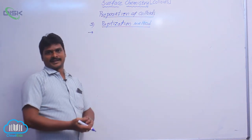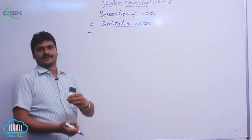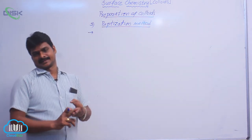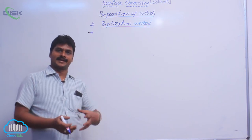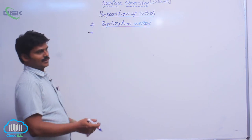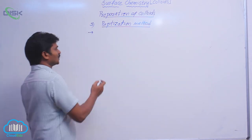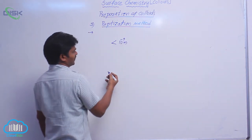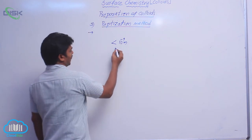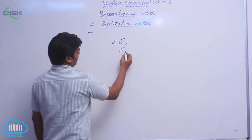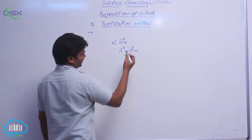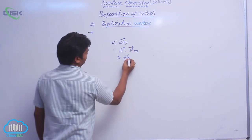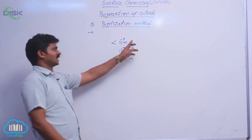I had earlier explained that there are three types of binary mixtures: true solution, colloidal solution, and suspension. These three binary mixtures vary in particle sizes. In true solution, the particle size is less than 10⁻⁹ meters. In colloidal solution, the particle range is 10⁻⁹ to 10⁻⁶ meters. In suspension, it is greater than 10⁻⁶ meters.